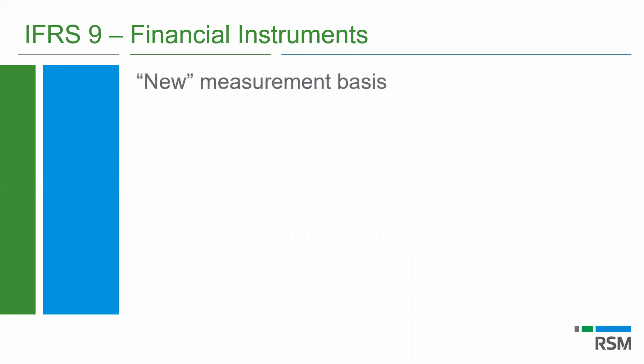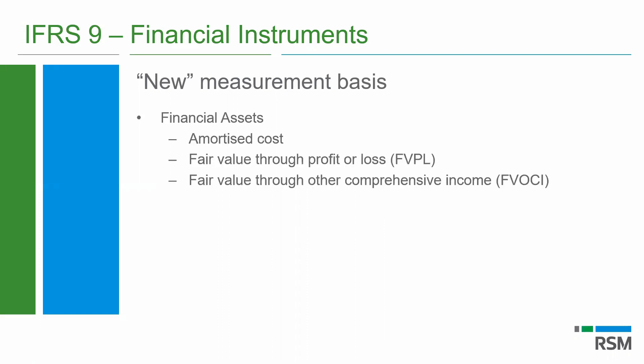The new measurement bases available for financial assets — life has really been made easier. There are really three categories: amortized cost, fair value through profit and loss, and fair value through other comprehensive income (fair value through OCI). I'll go through each one of those and explain what kind of financial assets would fall under those categories. Financial liabilities is pretty much as we've always known it — nothing really has changed there. We still have the amortized cost category and the fair value through profit or loss category.